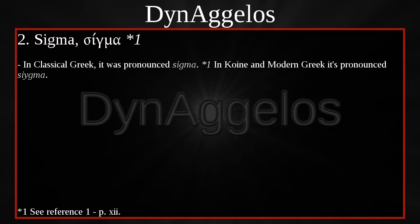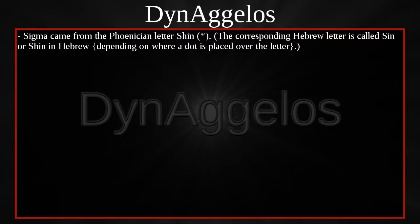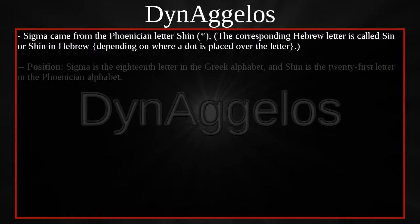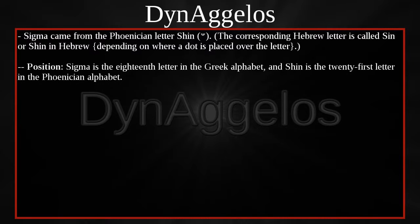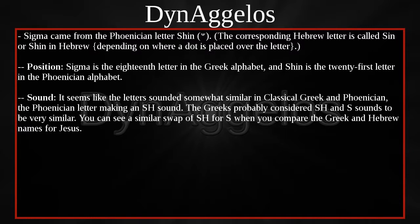SIGMA — in classical Greek it was pronounced SIGMA. In Koine and modern Greek it's pronounced SIGMA. SIGMA came from the Phoenician letter SHIN. The corresponding Hebrew letter is called SIN or SHIN, depending on where a dot is placed over the letter. SIGMA is the 18th letter in the Greek alphabet, and SHIN is the 21st letter in the Phoenician alphabet. It seems like the letters sounded somewhat similar, the Phoenician letter making an SH sound. The Greeks probably considered SH and S sounds to be very similar.